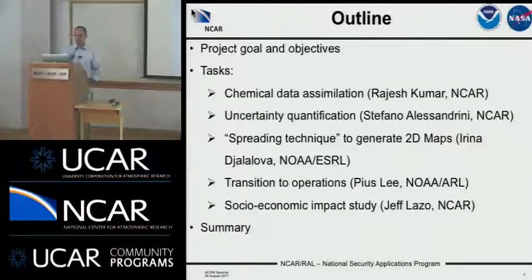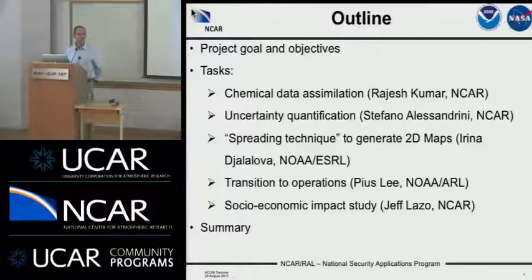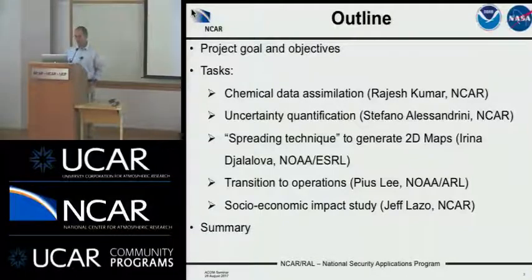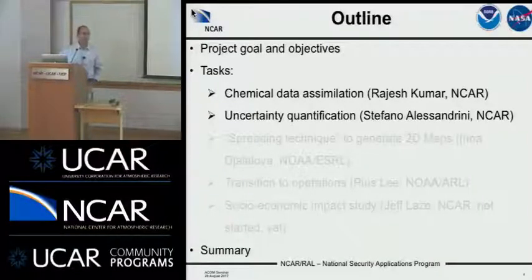Here's the outline of my talk. I'll describe the project goals and objectives and the list of tasks. There is a task on chemical data assimilation, one on uncertainty quantification, one on a spreading technique to generate two-dimensional maps led by colleagues at NOAA, and an important task to transition the developed algorithms to operations for NOAA and ANSEP. There is also a new task on a socio-economic impact study led by Jeff Lasso. For the time I have today, I'm going to focus on the chemical data assimilation task and the uncertainty quantification task.